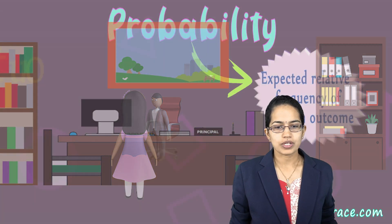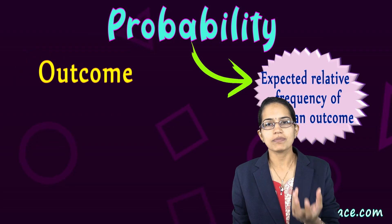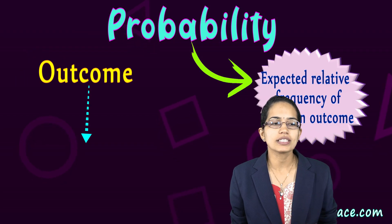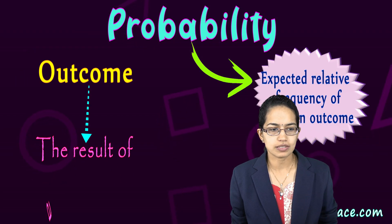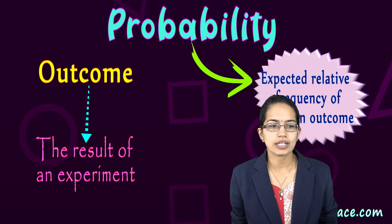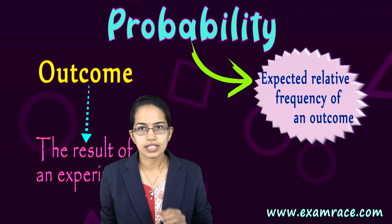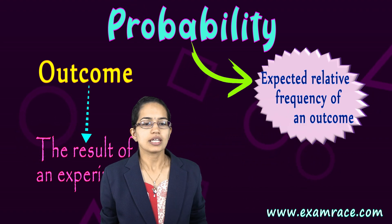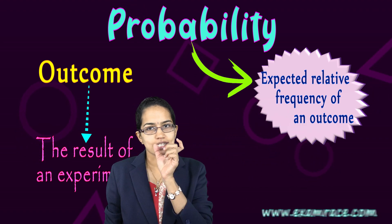What is an outcome? Outcome, simply put, is the result of the experiment that you are trying to do. So, outcome is the result.